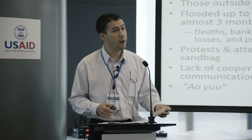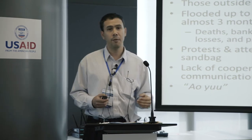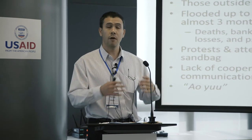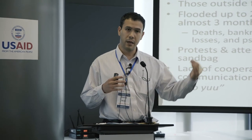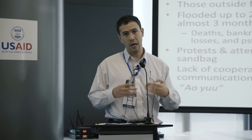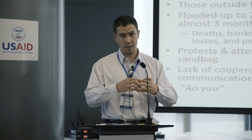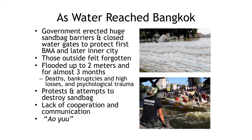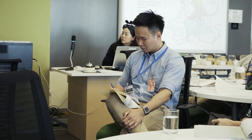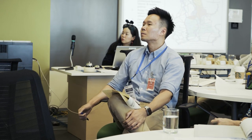As the water reached Bangkok itself, the government erected huge sandbag barriers and closed water gates, first to protect the boundaries of Bangkok. But then the dike was breached in two areas, and so they decided to protect the inner city. The problem was those outside the sandbags and on the other side of the water gates felt forgotten. Many people felt a high degree of injustice, and there were dozens of protests during this time.